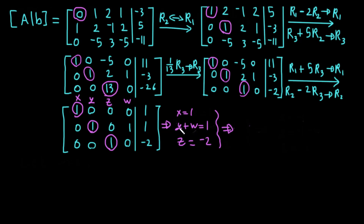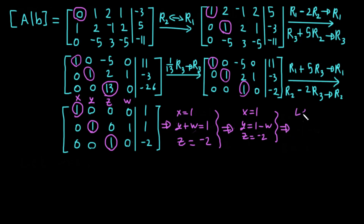For example, we can substitute y = -1 and w = 2 to get 1, or y = 0 and w = 1. There are infinitely many solutions. To express them, we move w to the other side: x = 1, y = 1 - w, z = -2. Let w = t where t belongs to ℝ.